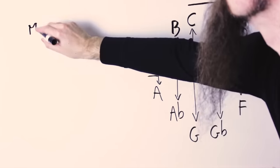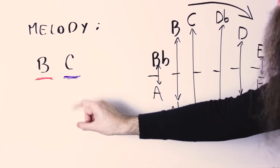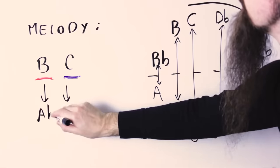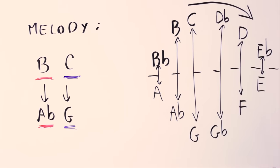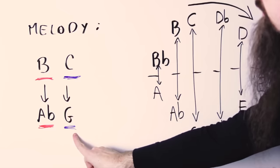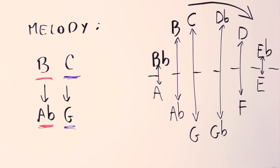For instance, a short melody that contains only the notes B and C, gets transformed into a short melody that contains only the notes A flat and G. And so if the original melody or chord progression sets up some tension and then resolves it, the transformed chord progression or melody will do exactly the same.